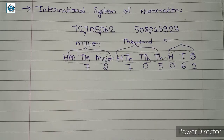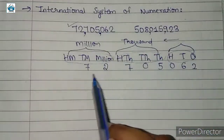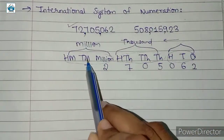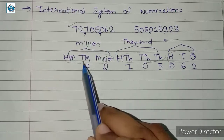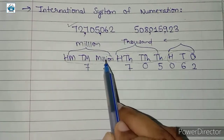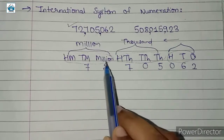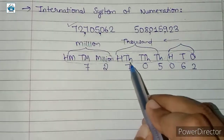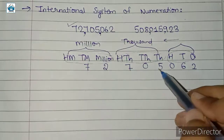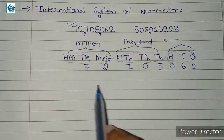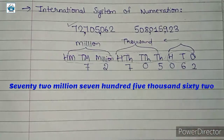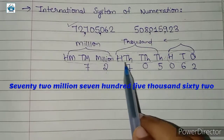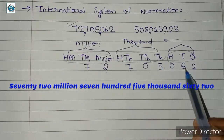If we were to read this number, it is seventy-two million. The place value of seven is ten-million and the place value of two is million, so together we call it seventy-two million. Then the place value of seven is hundred-thousand and five is thousands. So we read this number as seventy-two million, seven hundred and five thousand, sixty-two.